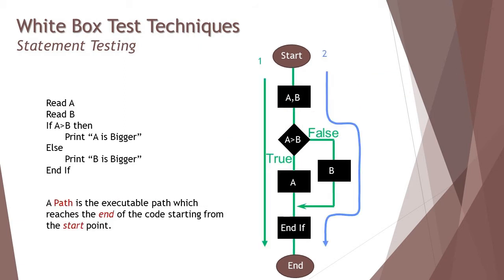A path is an executable path which reaches the end of the code starting from the start point, but it's really important when you draw a path in a flowchart it should cover or must cover the statements when you're talking about statement testing. If you see in this example there's the else statement as well - if it is true it should print 'A is bigger,' else it should print 'B is bigger.' Thus we need at least two test cases to have 100% statement coverage.